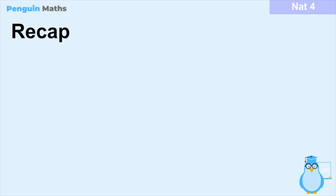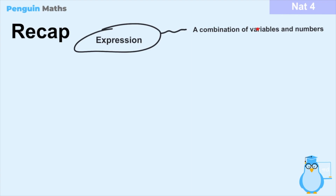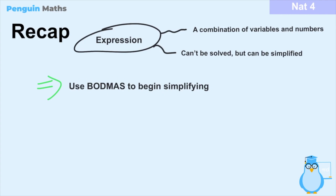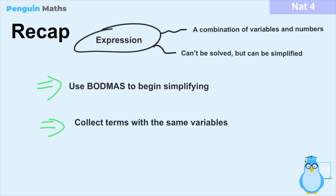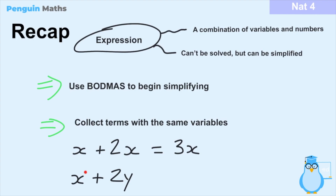To recap: an expression is a combination of variables such as x and y and numbers. Unlike an equation — which can be solved because it's equated to something via an equal sign — an expression can't be solved but it can be simplified. To simplify, use BODMAS: check for brackets, square or square root values, division, multiplication, and then addition or subtraction. Finally, collect terms with the same variables. For example, x plus 2x equals 3x because they share the variable x, but x plus 2y cannot be combined because x and y are different variables.